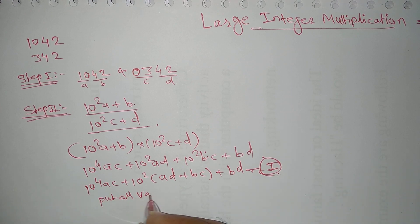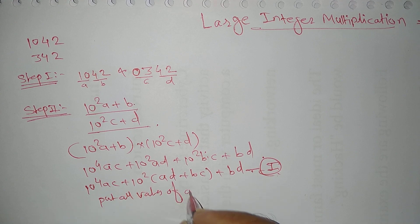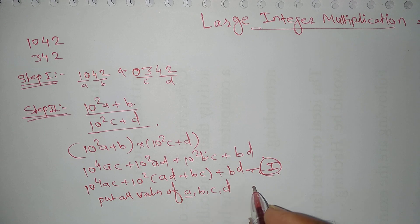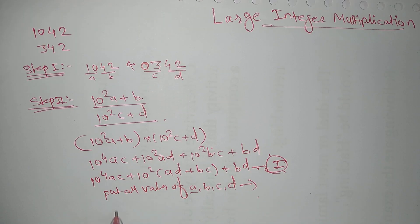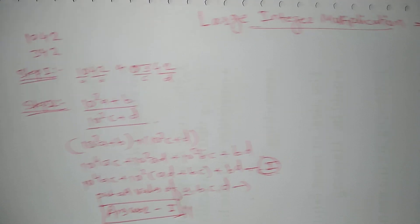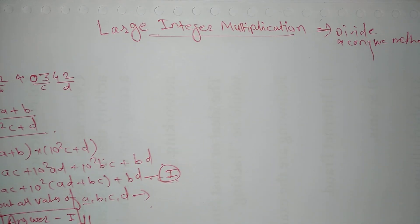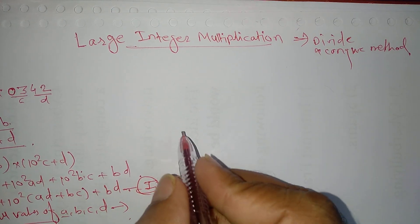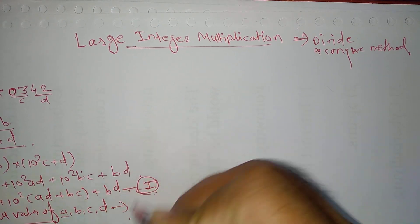I put all values of A, B, C, D into equation number 1 and I will get an answer — that will be answer number 1. After that, in step 2 we have done this expansion, and in step 3 we proceed further.